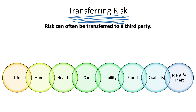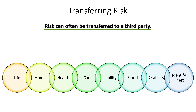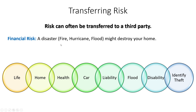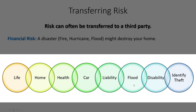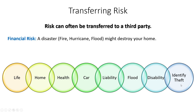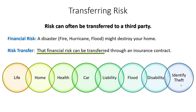The next risk treatment strategy is all about transferring risk. Sometimes risk can be transferred to a third party, and the best example of this is insurance. In your personal life you have many risks — a disaster like a fire, hurricane, or flood could destroy your home — and we transfer that risk through home insurance, life insurance, health insurance, car insurance, flood insurance, or even identity theft insurance. You pay for that policy and transfer the risk to an insurance company. Transferring risk isn't free, but if a serious event occurs, the financial risk falls on the insurance company, not you.